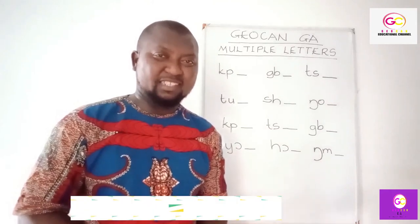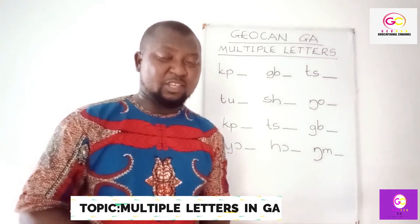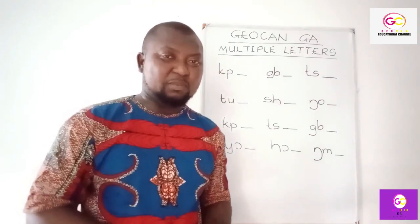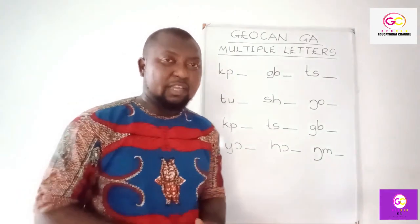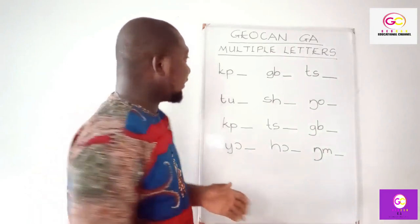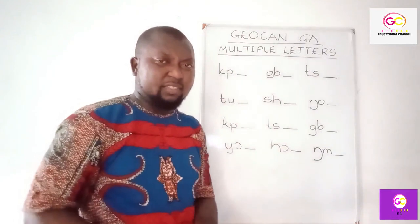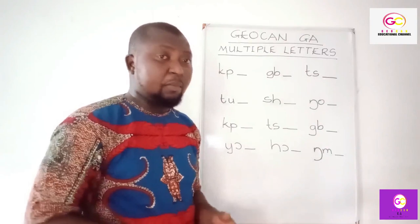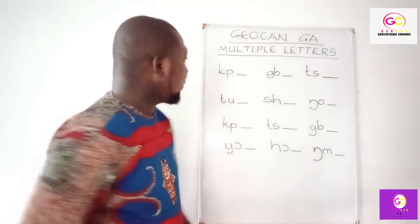Good. We are continuing with multiple letters in Ga today. This is another session — I believe you've been watching our previous videos and also trying to pronounce some of those multiple letters and their combined sounds. When you are able to get the sounds well, it will be easy for you. Let's move to the board. Today we are going to add one letter to these particular letters in order to get other sounds, meaning we are moving towards three letters. Remember in our previous editions we were dealing with two letters; today we're dealing with three letters.